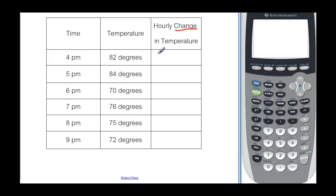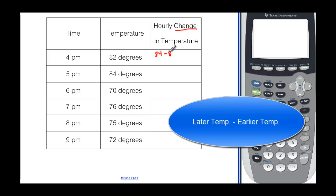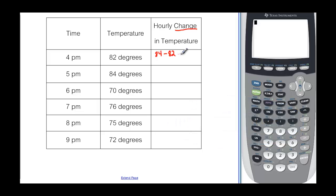Well to do that we want to take the latest and then subtract from the earliest temperature and see what we get. And if we take 84 minus 82 we see that it is a two degree difference. So we do the same thing for the rest of this table.